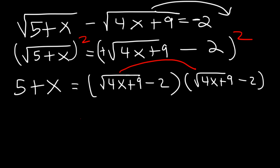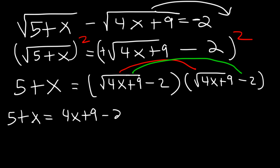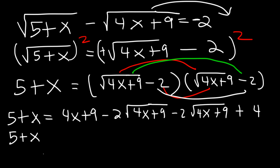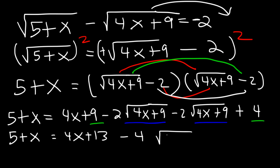Once we multiply these two, radical 4x plus 9 times radical 4x plus 9 — the radicals cancel, giving just 4x plus 9. The radical times negative 2 gives negative 2 root 4x plus 9, and we get another similar term. Finally, negative 2 times negative 2 is positive 4. Now let's combine like terms: 9 and 4 combine to give 13, so we have 4x plus 13, and the two middle terms combine to negative 4 root 4x plus 9.